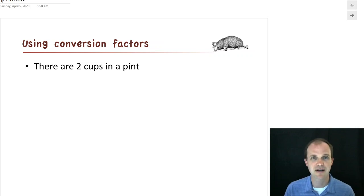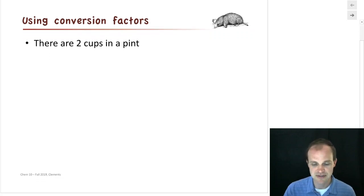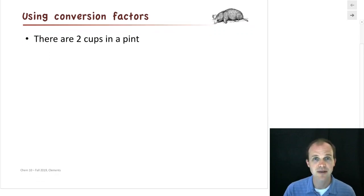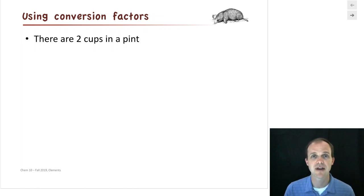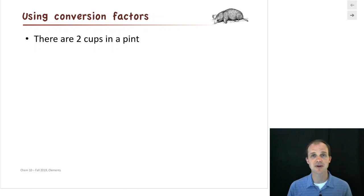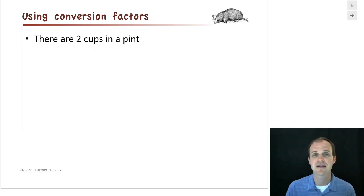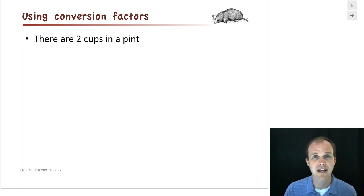So we're going to talk about a very simple example: two cups in one pint. If I've got four cups, how many pints do I have? Most of you could come up with four cups is two pints. Or if I said I've got 10 pints, how many cups? Most of you could say 20 cups off the top of your head. But what we're going to work on is how do we do that very methodically?